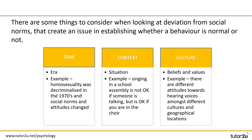We've got three of those issues on screen. First up, we've got time — by time we mean the era in history. A good example you can use in your evaluations is homosexuality, which was decriminalized in the 1970s. After this point, social norms and attitudes would have changed, so our definition of abnormality should change with it as well.